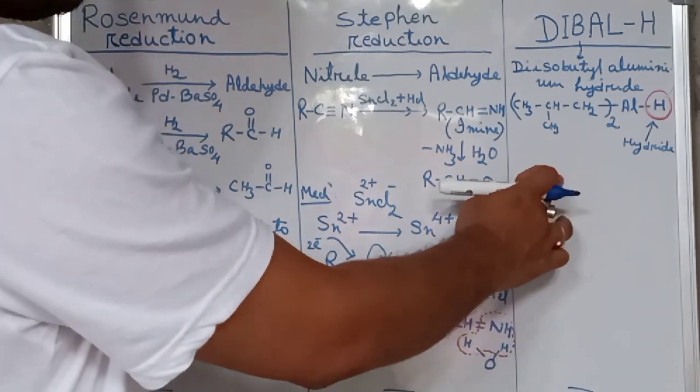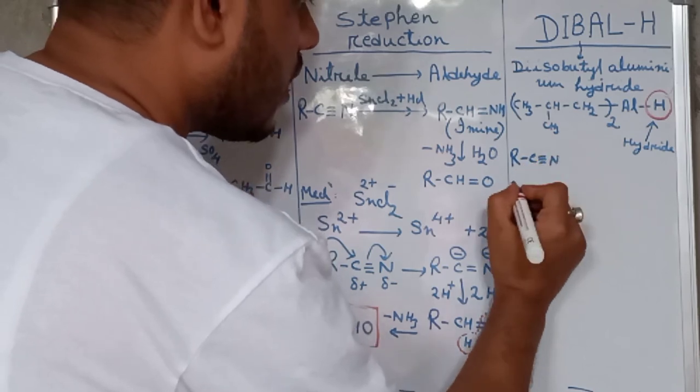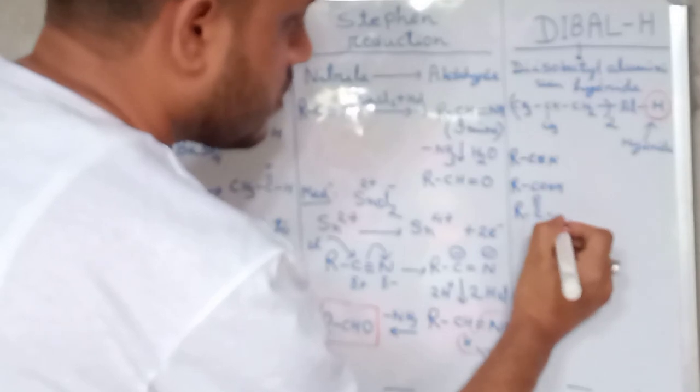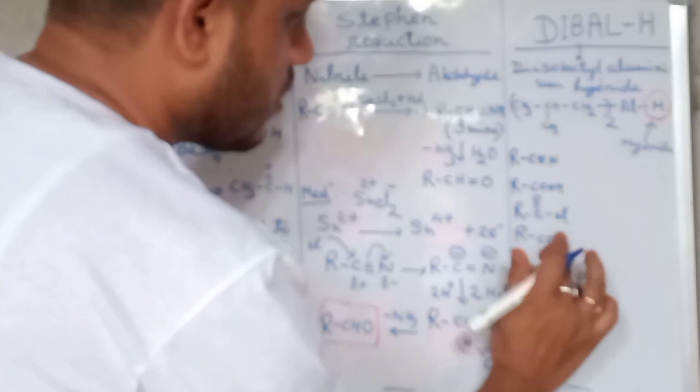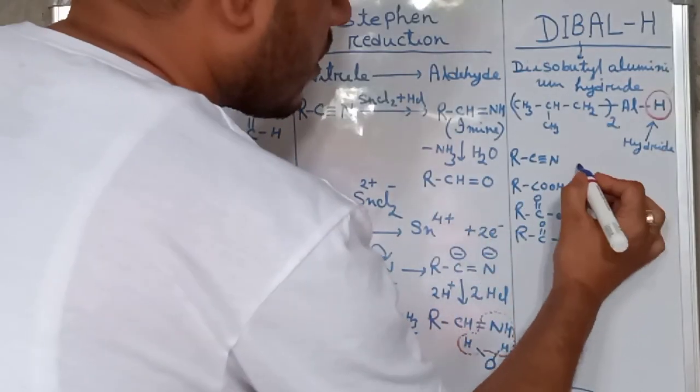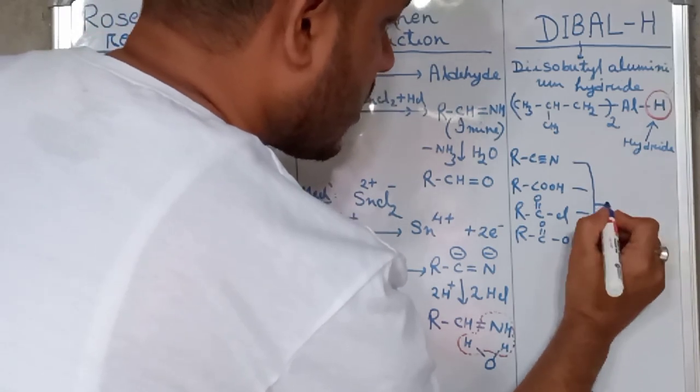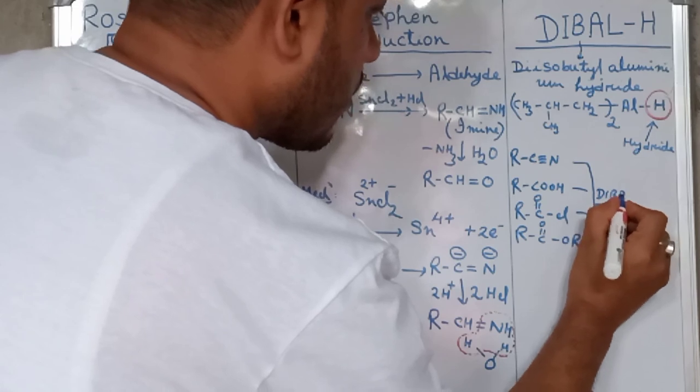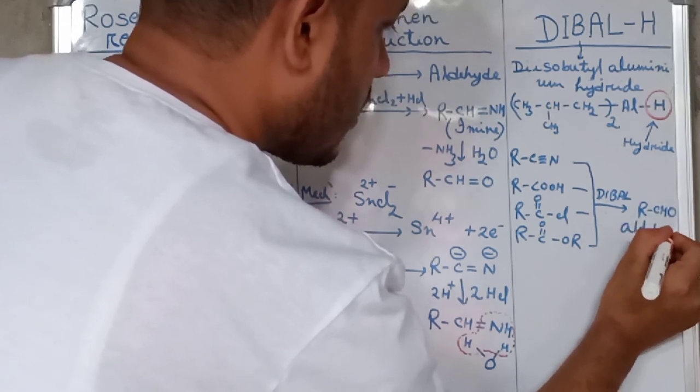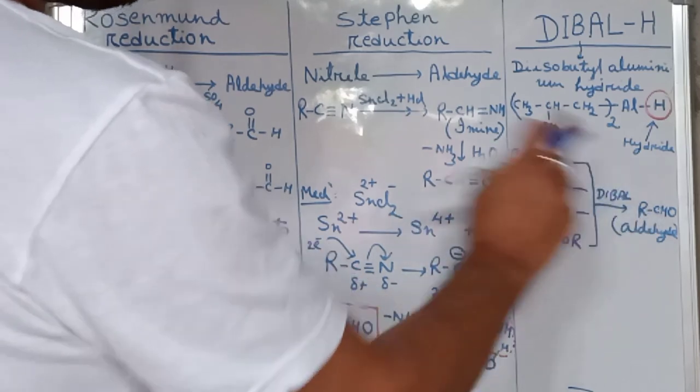So if we react DIBAL-H with RC≡N (nitrile), or acid RCOOH, or acid chloride RCOCl, or ester RCOOR', all of them react with DIBAL-H to form aldehyde. If nitrile, acid, acetyl chloride, or ester are all reduced by DIBAL-H, they form aldehyde. So DIBAL-H is very important as it reduces all of them to form aldehyde.